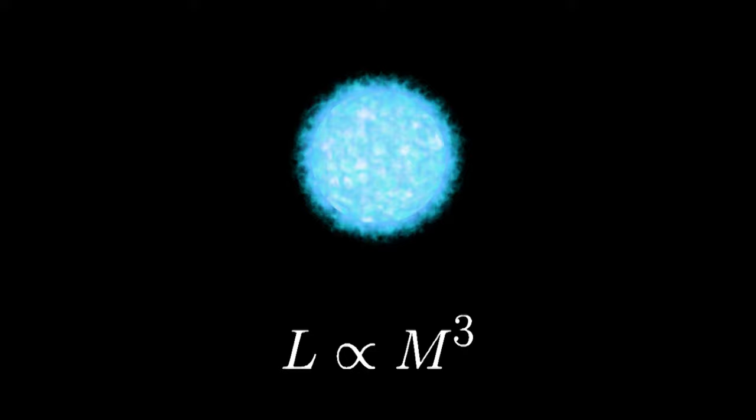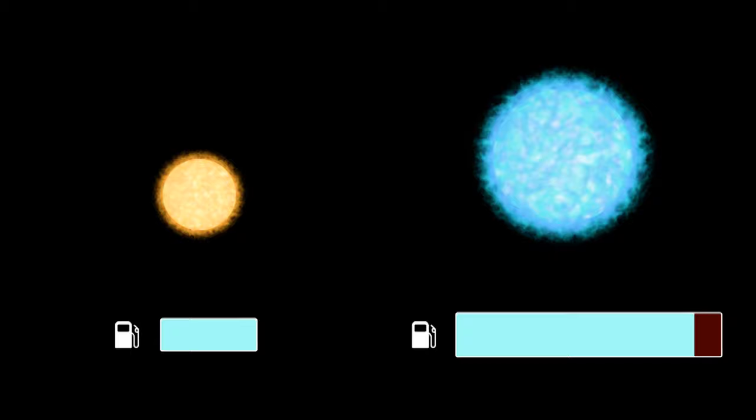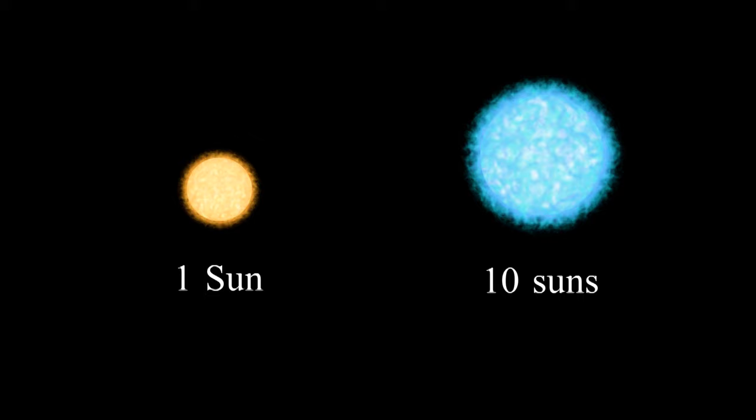Massive stars are bright. The brightness or luminosity of a star is roughly proportional to its mass cubed. Although massive stars have much more hydrogen fuel, they burn through it so much faster. A star 10 times heavier than the sun is over a thousand times brighter.